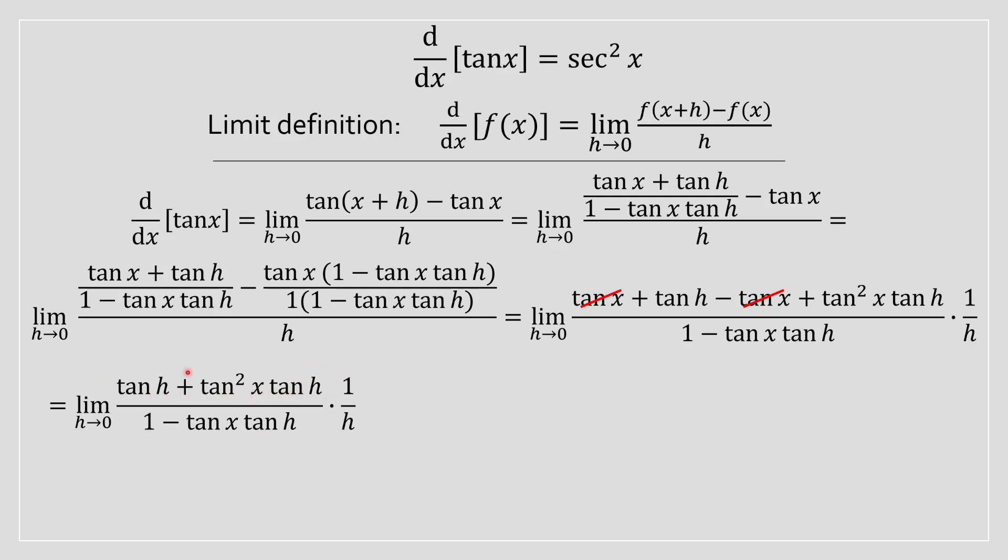We can further simplify the numerator by factoring out a tan of h. So once we do that, we're going to have a bracket term of 1 plus tan squared of x. And this bracket term right here can be rewritten according to trig identities as secant squared of x. Very important.